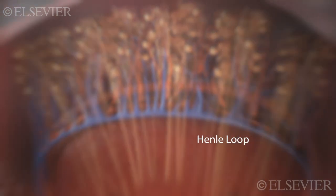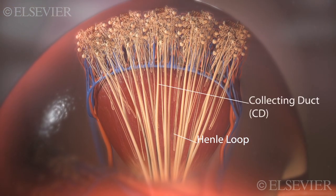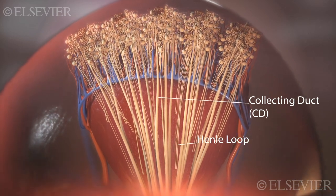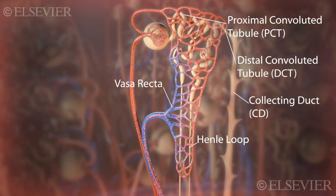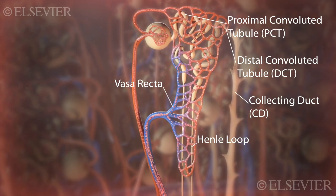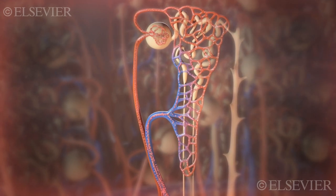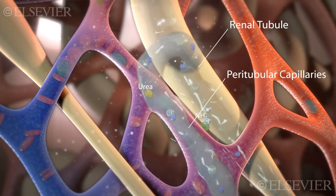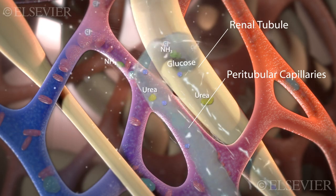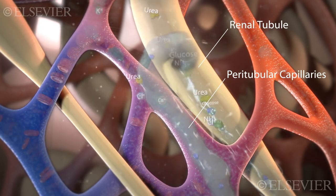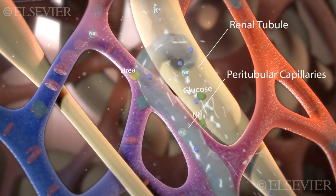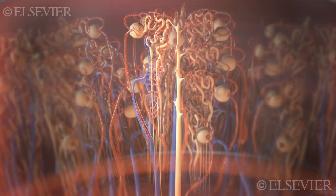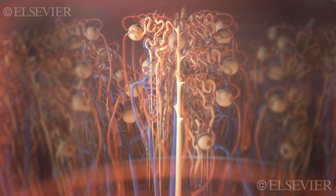Most of the pyramid consists of nephron loop of Henle segments and collecting ducts. The renal tubules are surrounded by peritubular capillaries with vasa recta that extend into the pyramid. As filtrate continues through the renal tubule, most of the water, certain ions, and all of the glucose are reabsorbed back into the blood in the peritubular capillaries. This process, called tubular reabsorption, occurs mostly in the PCT.